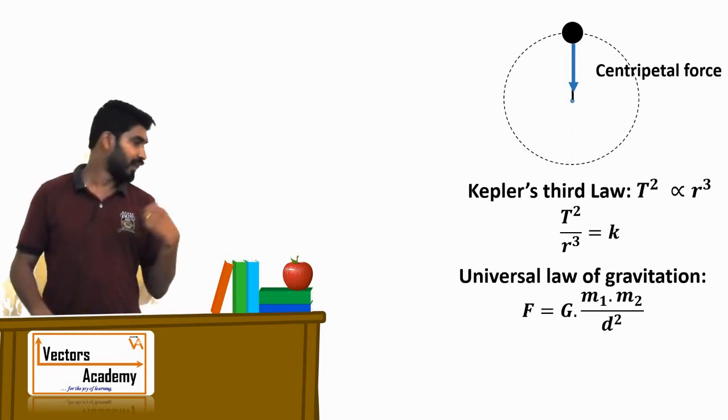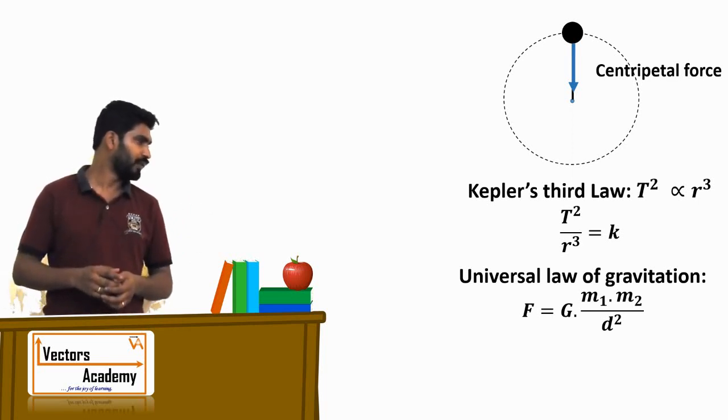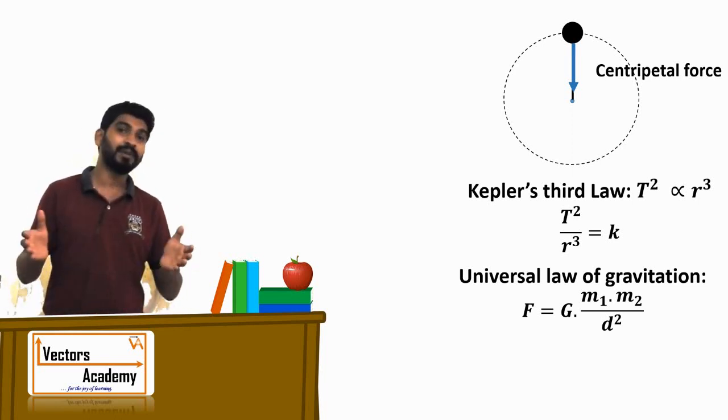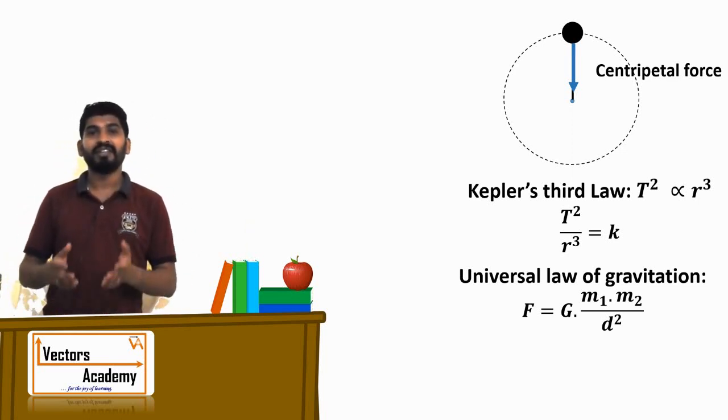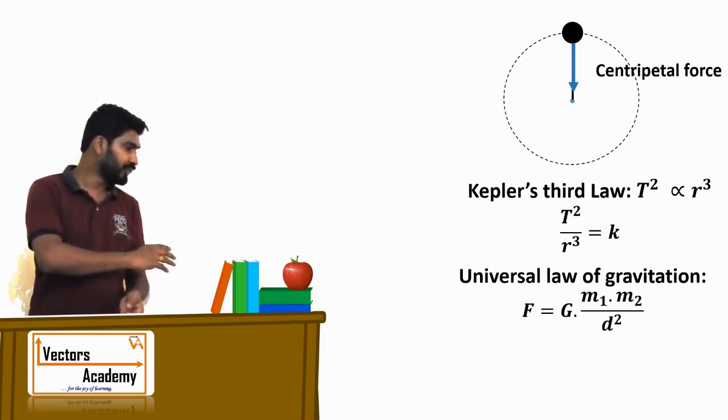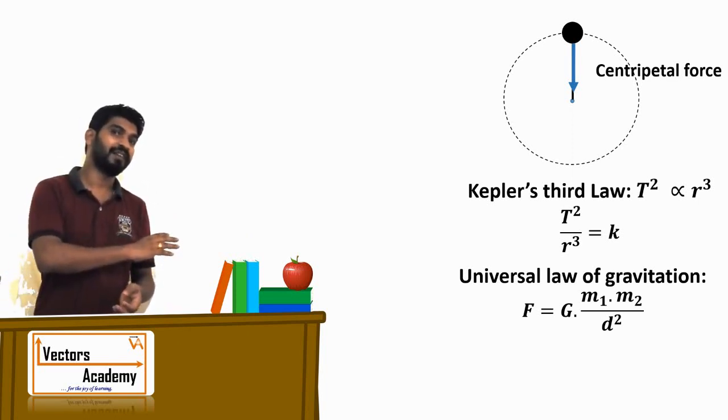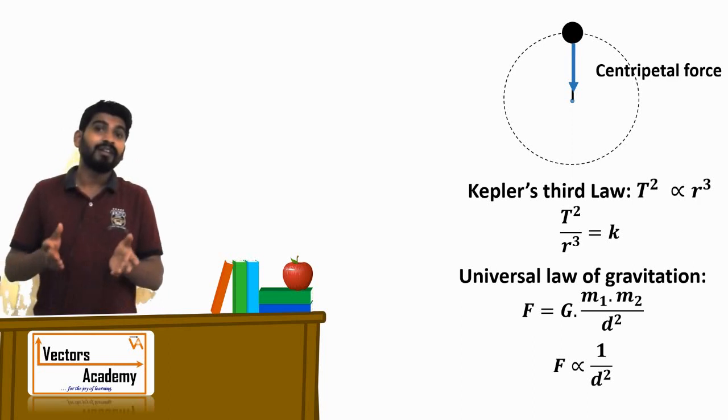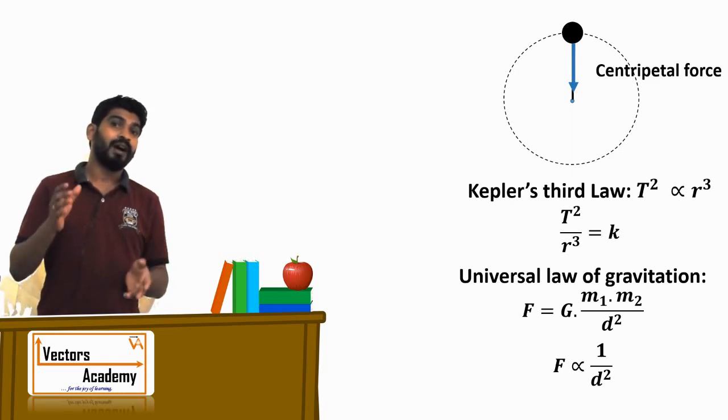We have also seen the universal law of gravitation, which states F = G(m₁m₂)/d², where m₁ and m₂ are the masses of two objects and d is the distance between them. If we consider the masses and G as constants, the only term remaining is d². Removing the constant terms, we get F is inversely proportional to d², or F ∝ 1/d².